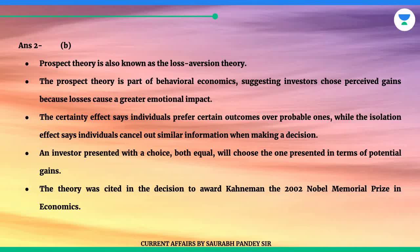The certainty effect says individuals prefer certain outcomes over probable ones, while the isolation effect says individuals cancel out similar information when making a decision. An investor presented with a choice, both equal, will choose the one presented in terms of potential gains. The theory was cited in the decision to award Kahneman the 2002 Nobel Memorial Prize in economics.